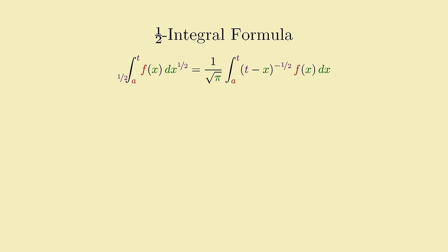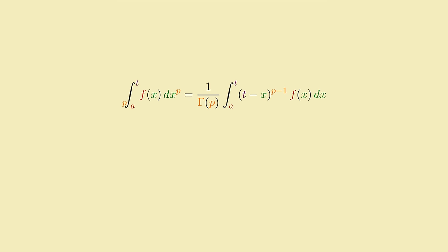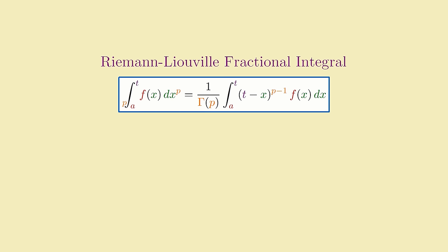But we're not limited to just half integrals, of course. Using the same trick, you can similarly derive a formula for a one-third integral, and show that applying it three successive times results in a single integral. More generally, the formula for a p-order integral, where p can be any positive real number, is written like this. And you can show that composing any p-order integral with a q-order integral is the same as having applied the p plus q order integral.